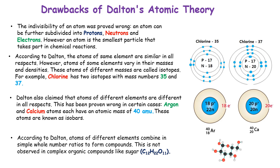For example, chlorine has two isotopes with mass numbers 35 and 37. Dalton also claimed that atoms of different elements are different in all respects, but this has been proven wrong in certain cases — argon and calcium atoms each have an atomic mass of 40, and these atoms are known as isobars. Lastly, according to Dalton, atoms of different elements combine in simple whole number ratios to form compounds, but this is not observed in complex organic compounds like sugar.